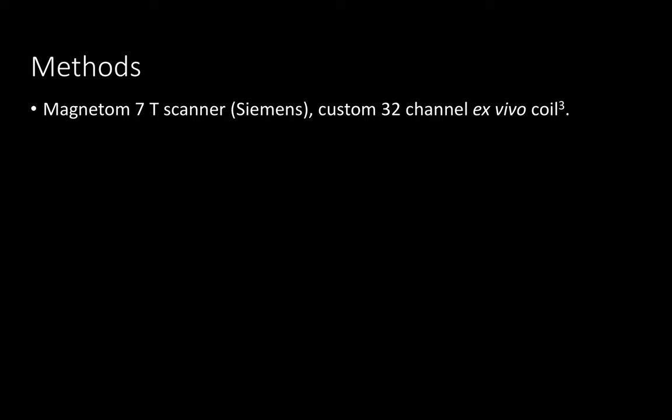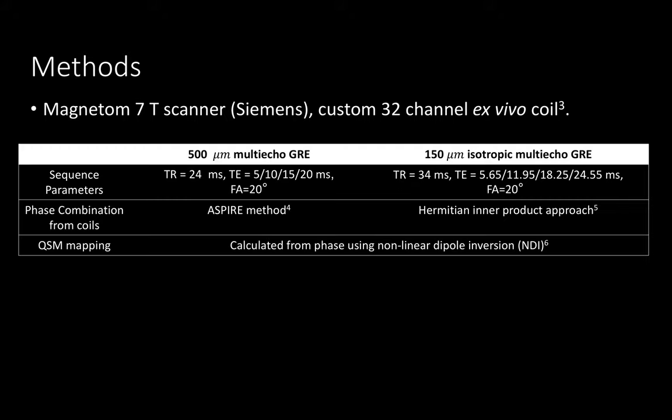We collected ex vivo MRI data on a whole human hemisphere using a Magnetom 7T scanner and a custom 32-channel ex vivo coil. We acquired a 500 micron multi-echo GRE scan with the following parameters and a 150 micron isotropic multi-echo GRE for the same hemisphere.